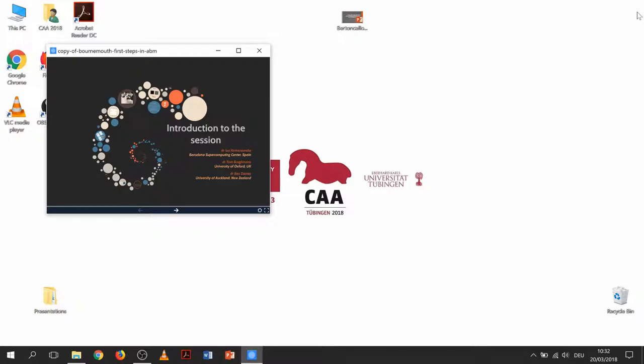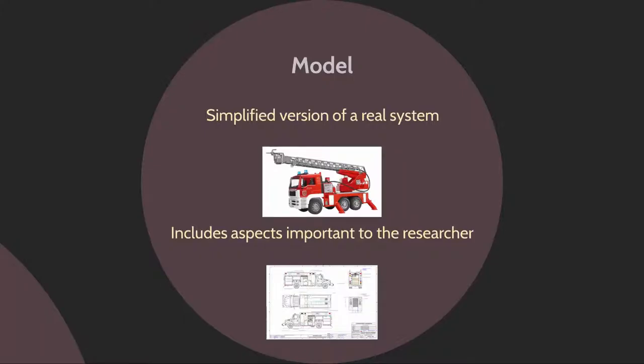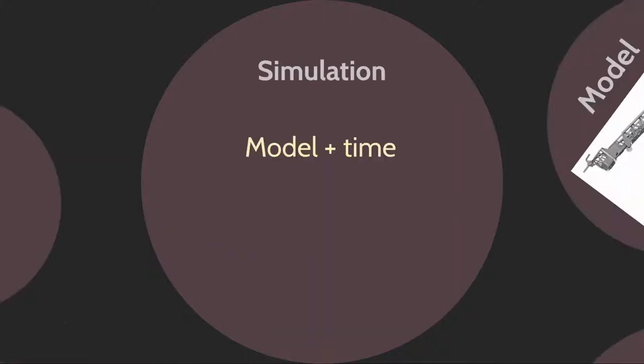So a model is a simplified version. It's always simplified. It doesn't have the same complexity as the real thing, and it includes aspects that are important to the researchers. And what those aspects are, the key aspects of the real system or not, this is a matter of debate. But as far as we're concerned, if the researcher says they are important, then that's what they are. So a simulation is simply a model plus the arrow of time. When things change, when things evolve, when things change over time, we don't create a model, we create a simulation. But at the very core of it, it's the same thing.